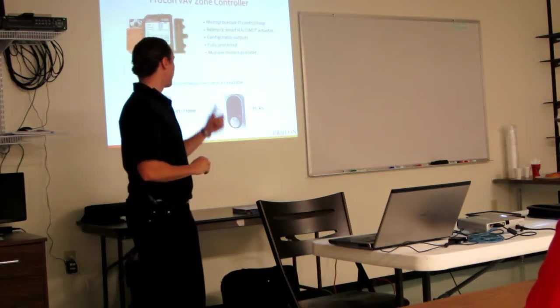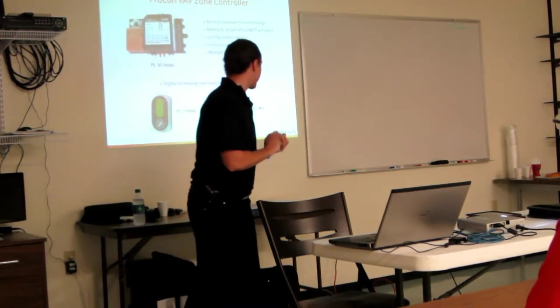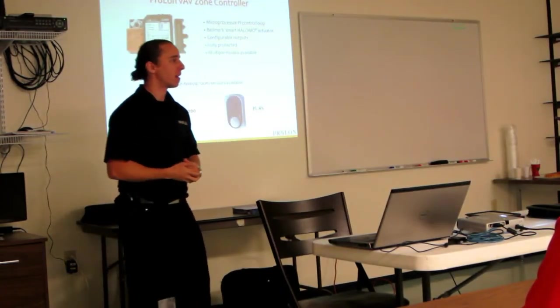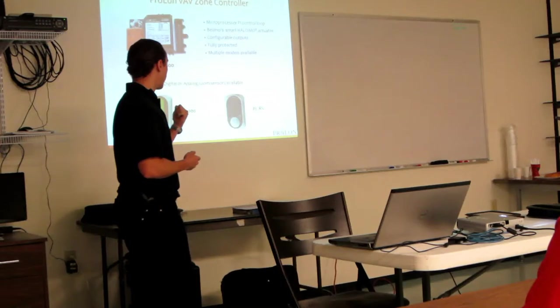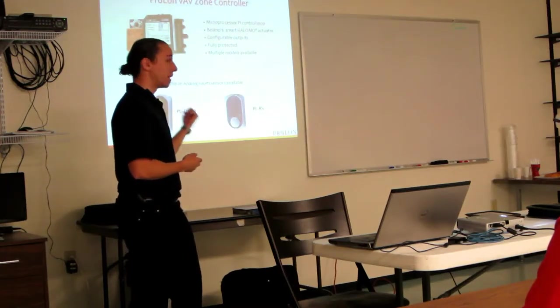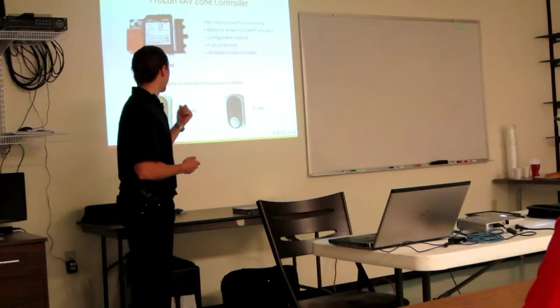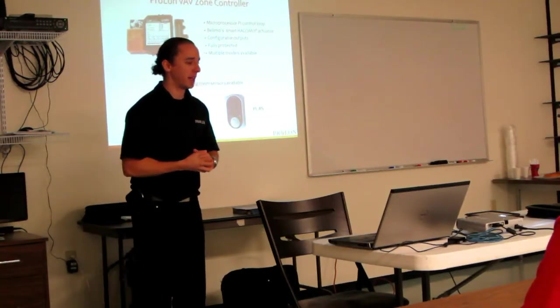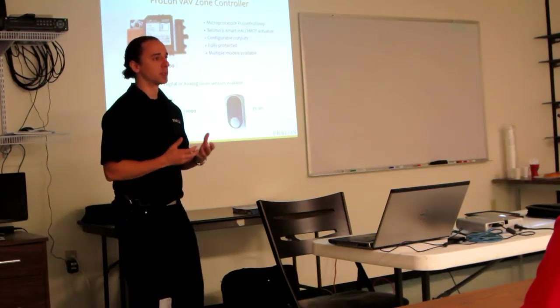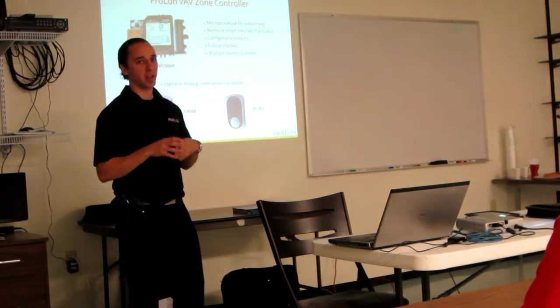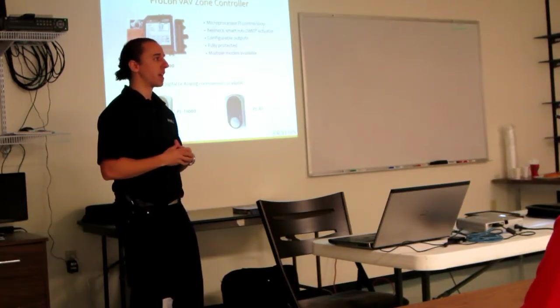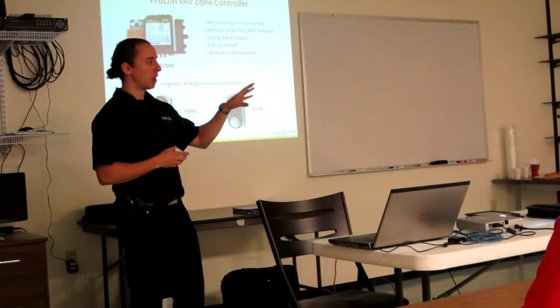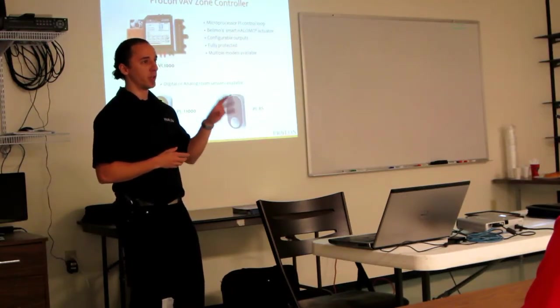And down here we have the T1000 and the PLRS. The PLRS is just a basic analog room sensor. And the T1000, which other than having a really cool name, he's a bit more special because he's not only a room sensor in the sense that he sends the room temperature and the set points. But you can actually access all the configuration menu of your VAV controller through its digital menu.